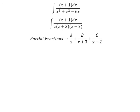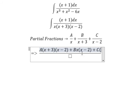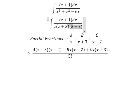Now we do common denominator. We have A times (x+3)(x-2), plus B times x(x-2), plus C times x(x+3). So we have three factors here.